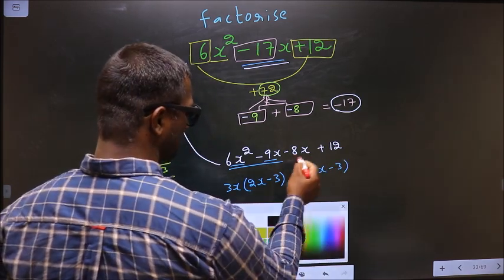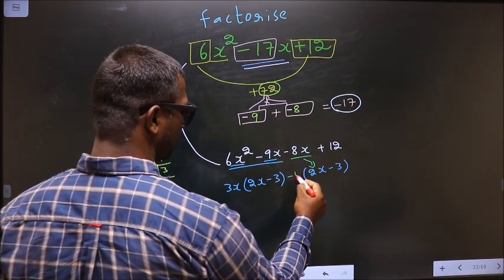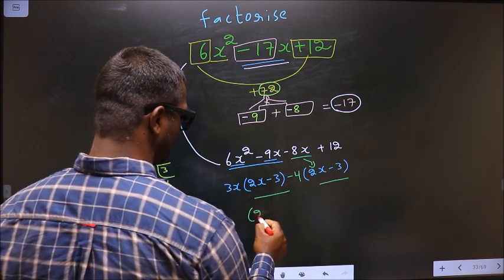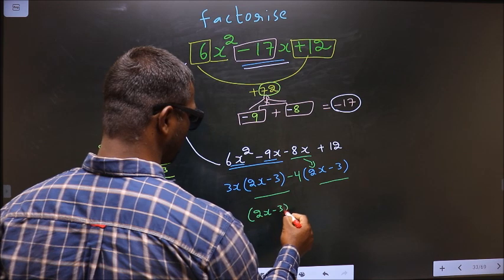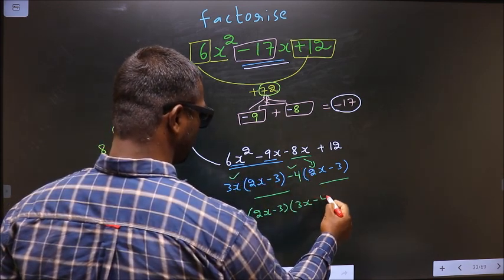Now from this, 2x has gone inside, so outside you will be left with -4. Now you take out (2x - 3) common. So here you have 3x and here you have -4.